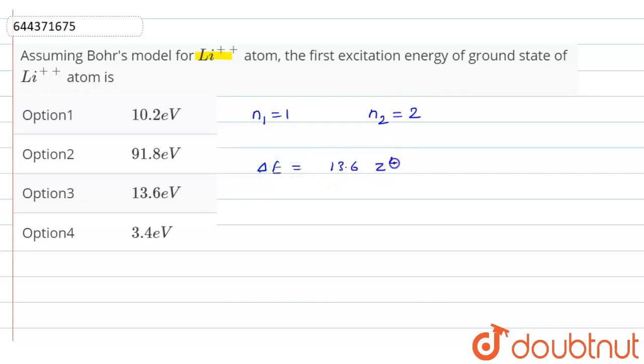So if you put values - for lithium atom, atomic number of lithium atom is 3, so z² will be equals to 9.